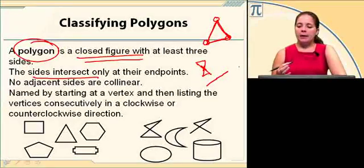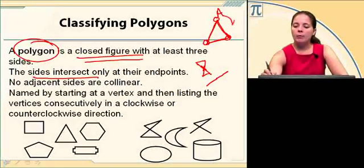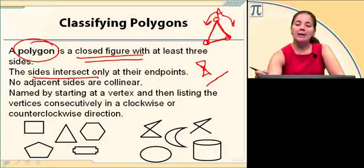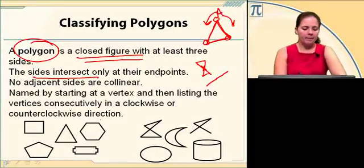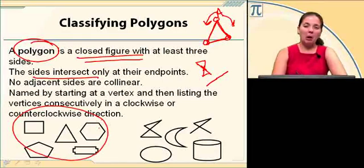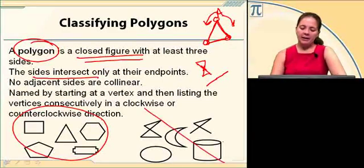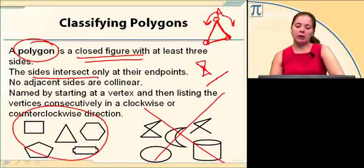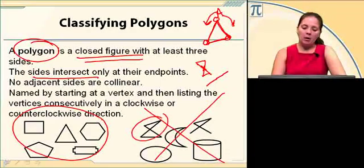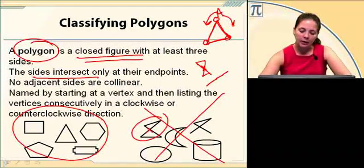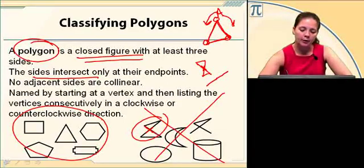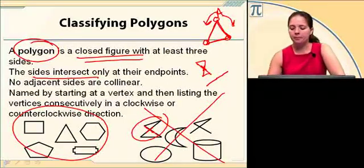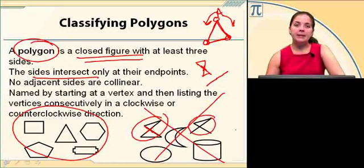When we name them, you start at any vertex and then you move either clockwise or counterclockwise around naming them in consecutive order. These are all polygons. These are not polygons. This one's not a polygon because it intersects right there, and if that's not an intersection, if I'm trying to say these are two different sides, they're collinear, so that's a problem.